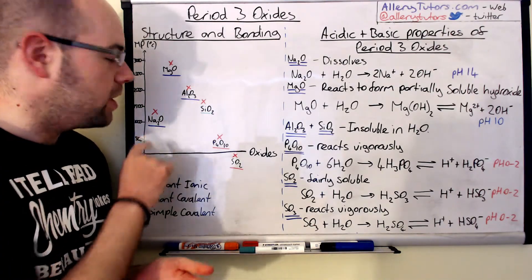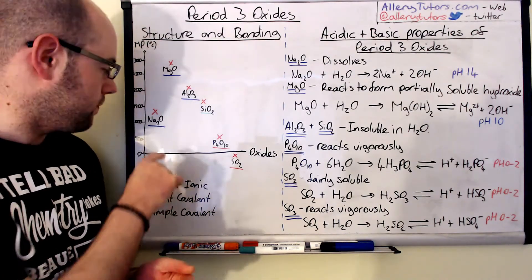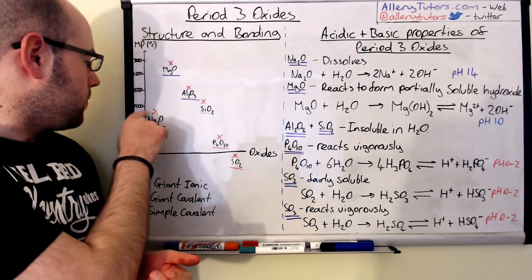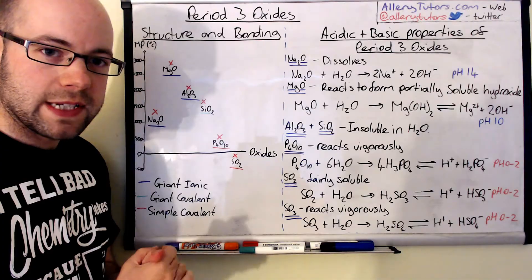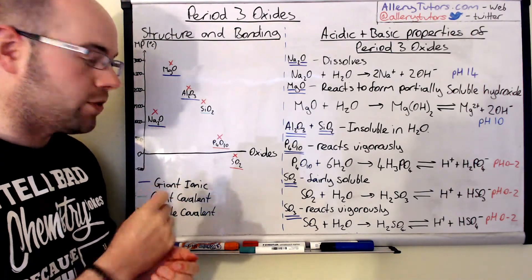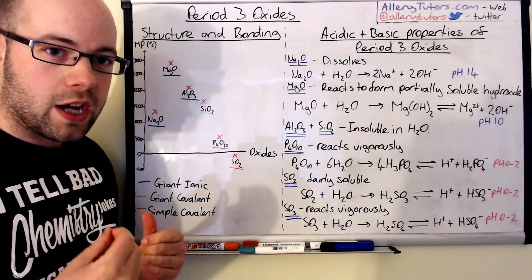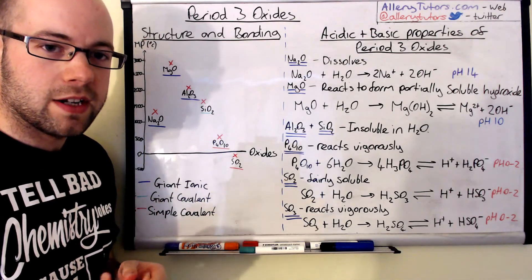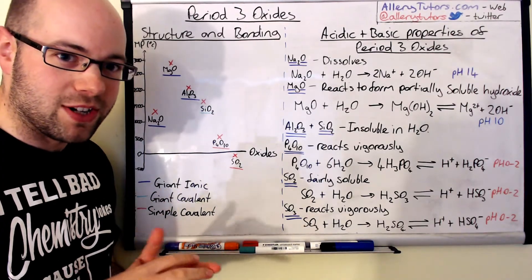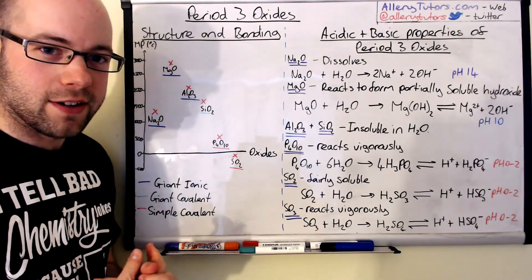So we're going to start with sodium oxide first. Now sodium oxide, sodium is in group 1, it forms an oxide of Na2O. It has a melting point of just below 1,500 degrees Celsius, and in purple here you can see that it forms a giant ionic structure. So that means that you've got a positive and a negative ion that's electrostatically attracted to each other, and this forms quite a strong giant ionic structure.